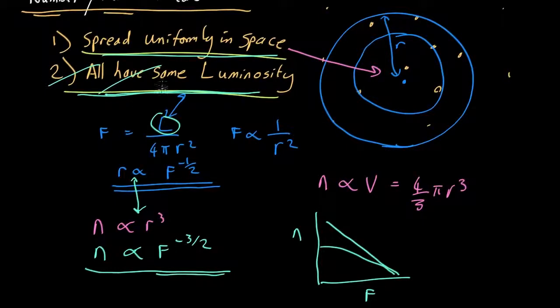So actually, we can get rid of that assumption. Our answer is the same. So if the numbers are not going as F to the minus 3 halves, the only possibility is that these things are not spread uniformly in space.